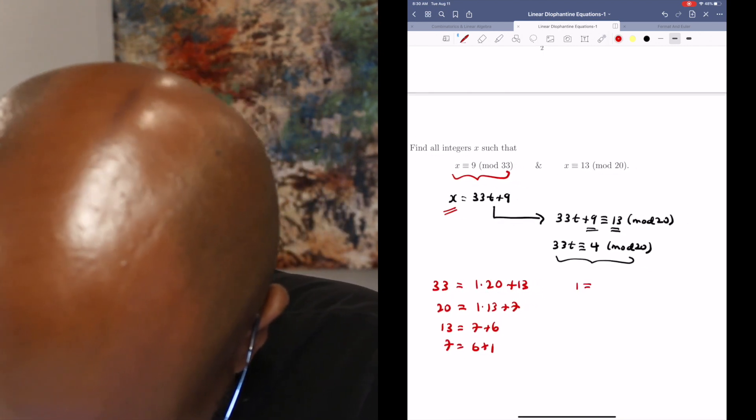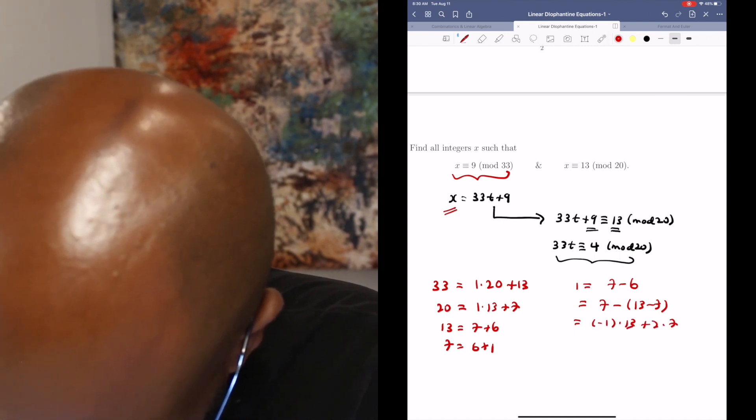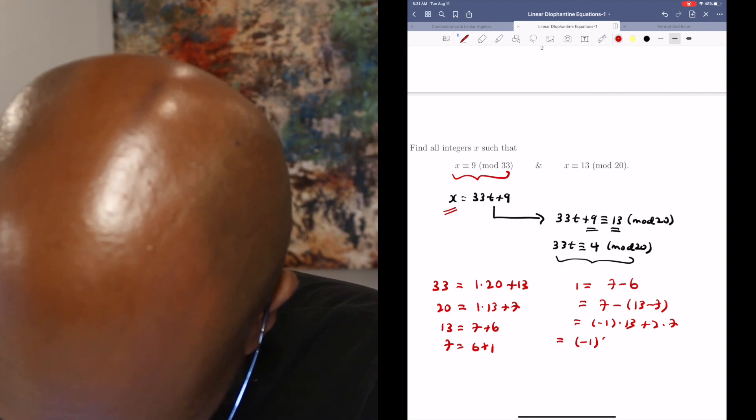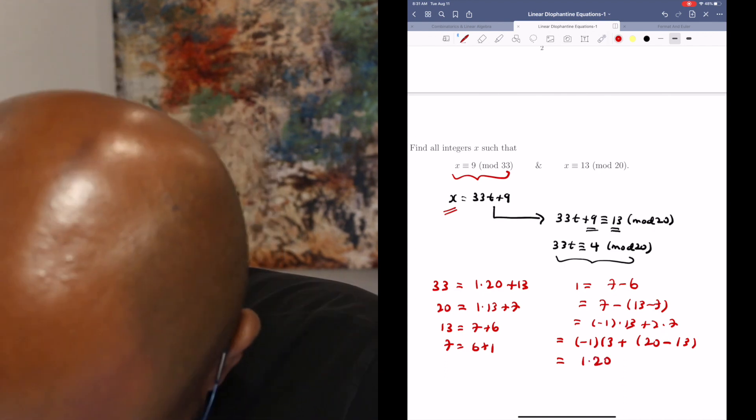So going backwards, we have 1 is 7 minus 6, which is 7 minus 13 minus 7. So we get negative 1 times 13 plus twice 7, which is negative 1 times 13 plus 20 minus 13. And so we get a copy of 20. There's a 2 here.